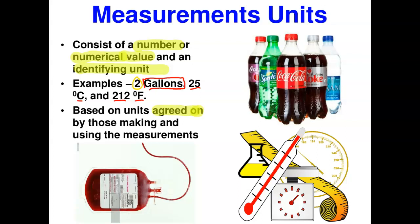Some everyday examples: soda bottles in the United States may be measured as 25 cl, 25 cubic centimeters, or 25 mL. A pint of blood is also a measurement. Common lab tools for measurement include the thermometer, tap for measurement, Erlenmeyer flask, and scale — all used to communicate and understand quantities.